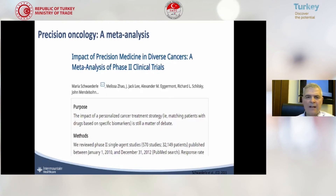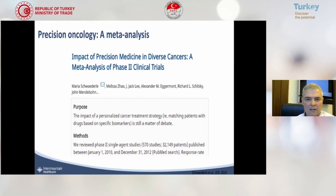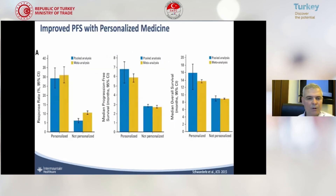If we look at a meta-analysis — for example, this paper by Maria Schraederle — this is a phase two clinical trial. With precision medicine and personalized medicine, the response rate is much higher than with conventional treatment, as you see on the left-hand side. In the middle, you can see the median progression-free survival of cancers: if you treat the patient with personalized medicine, you see much better outcomes than without personalized treatment.